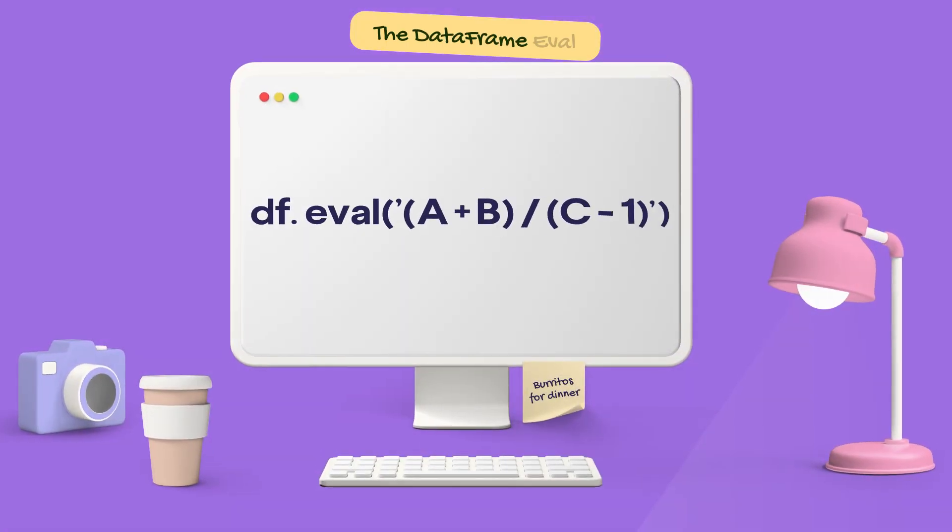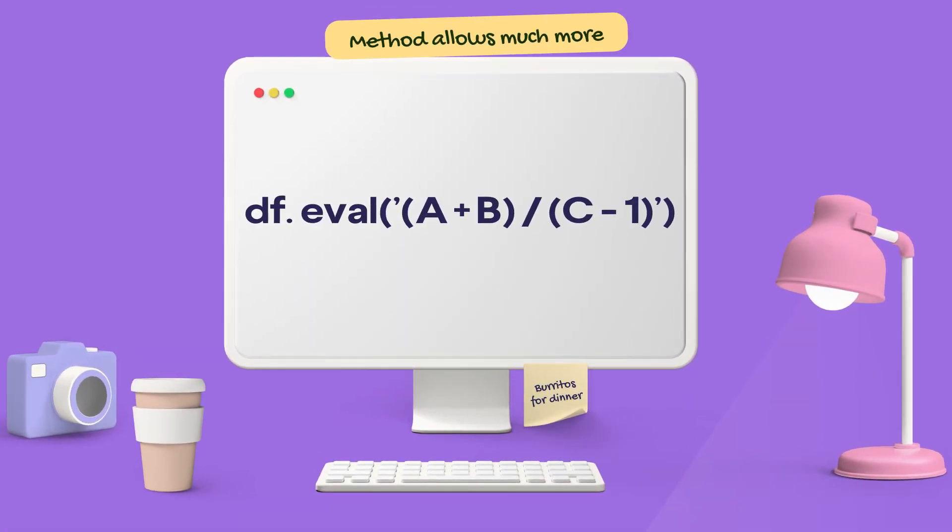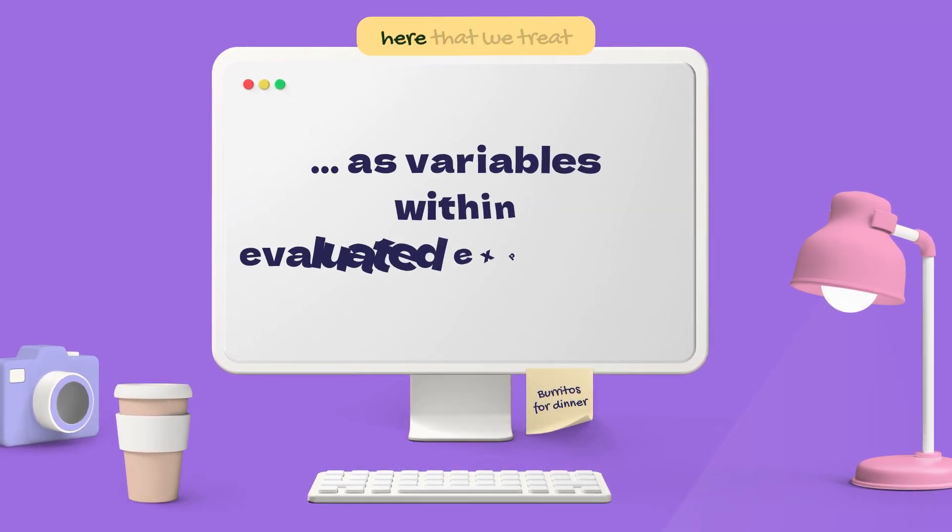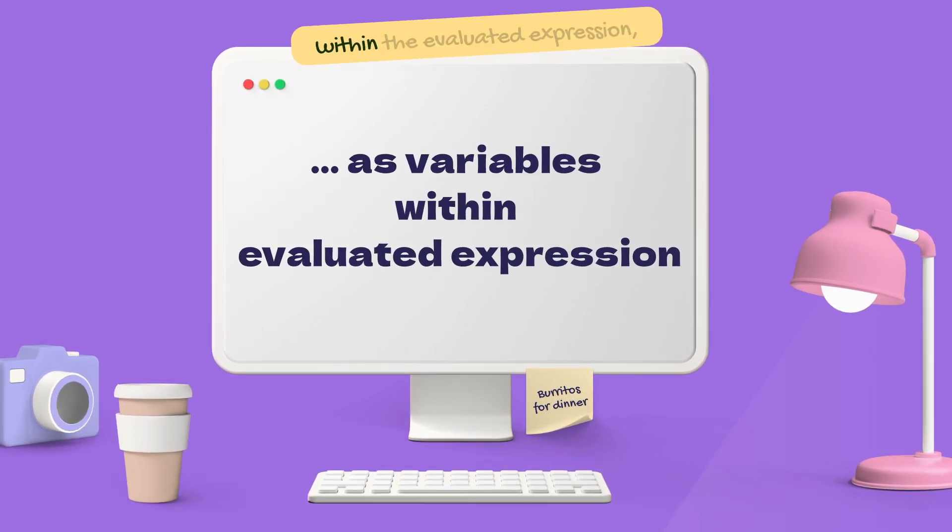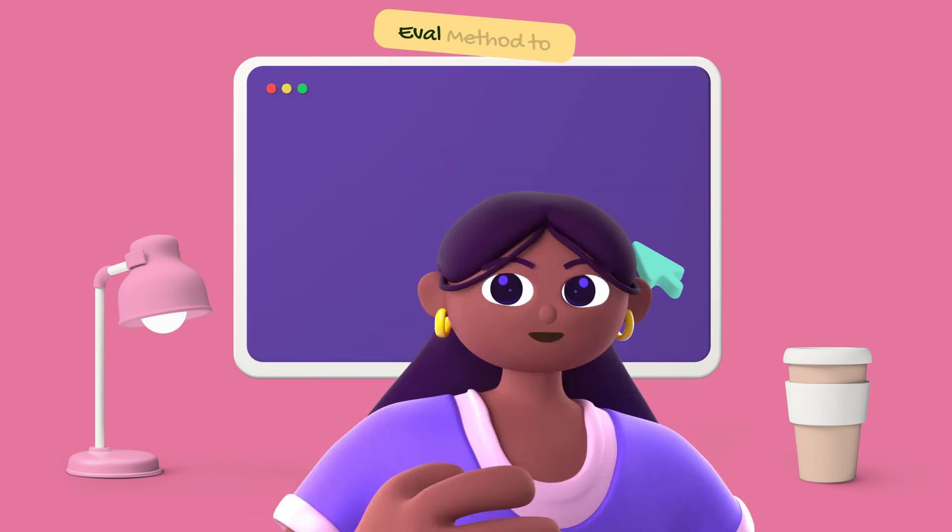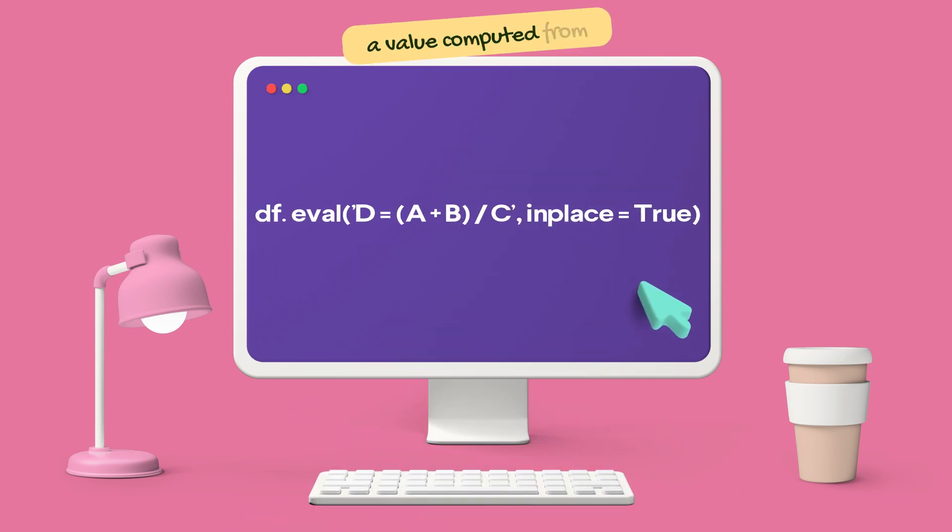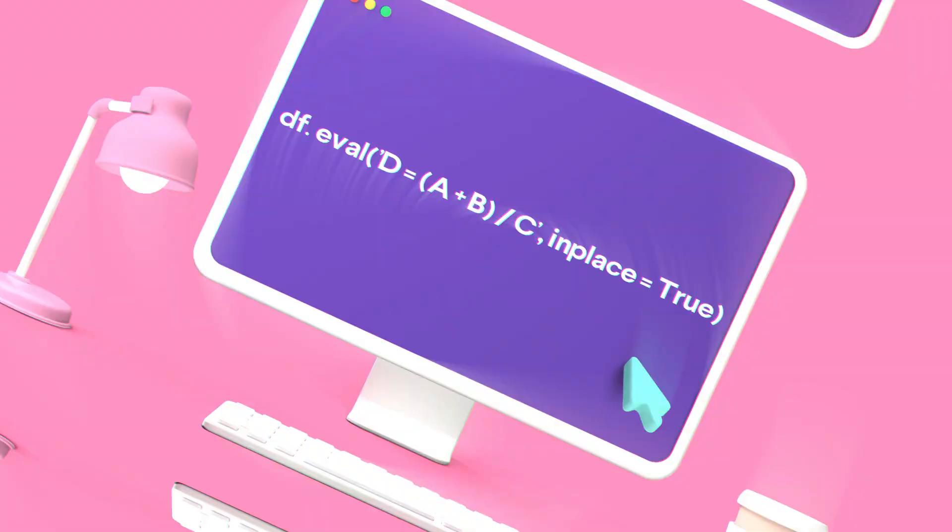The dataframe eval method allows much more succinct evaluation of expressions with columns. Notice here that we treat column names as variables within the evaluated expression, and the result is what we would wish. We can use dataframe eval method to create a new column and assign to it a value computed from other columns.